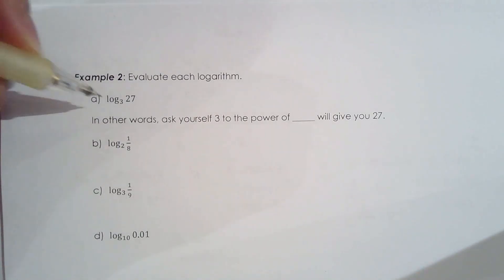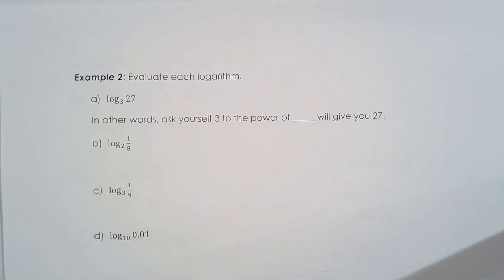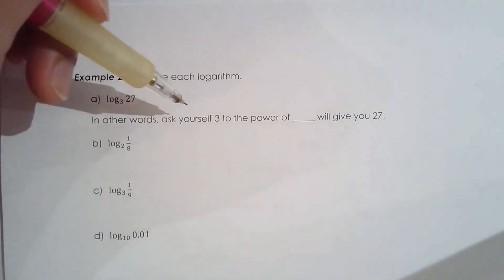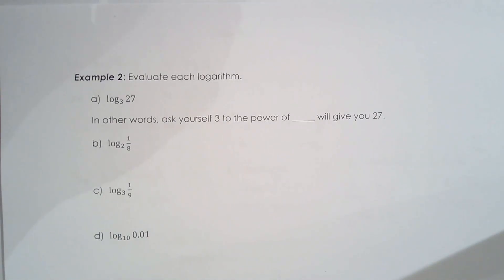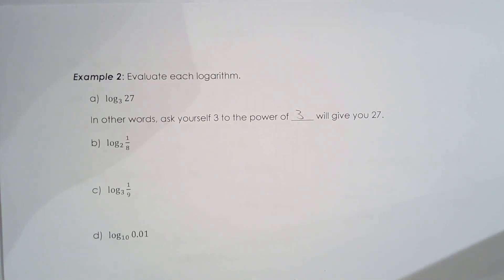Now we're evaluating logarithms. Log base 3 of 27 — every time someone asks you to evaluate a logarithm, immediately think: exponent. Ask yourself, 3 raised to the power of what number will give you 27? The answer is 3, because 3 cubed is 27. Knowing your powers will be very helpful in this unit. The answer is 3.